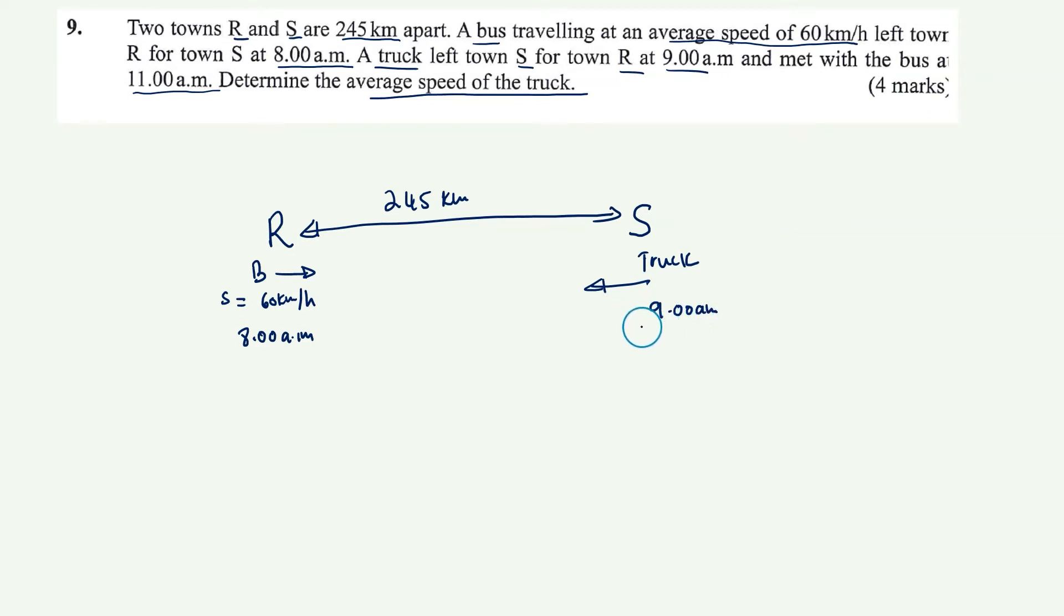And this is going towards town R. And this truck is leaving at 9am. And we don't know what the speed is, but that's what we've been asked to find. And it's going to meet the bus at some point. So they're going to meet each other at this point here. At this point, the time is going to be 11am.